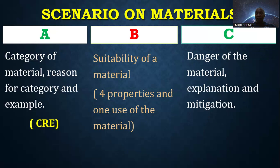In Basis C, we look at the danger of the material, the explanation of how the danger occurs, and then how it can be mitigated. These three aspects can be abbreviated as DEM: D for danger, E for explanation, and M for mitigation. These are the three main bases of assessment for Item 2 in chemistry theory, each scoring three points, which is why this item is marked out of nine.